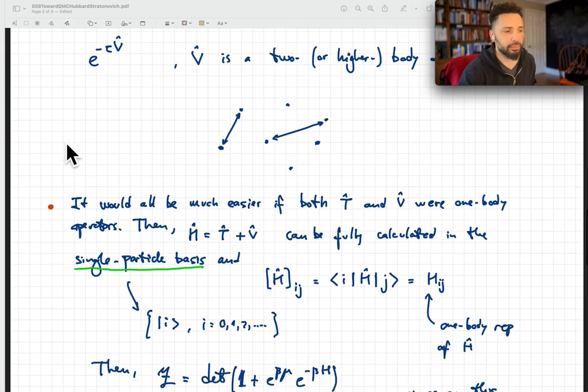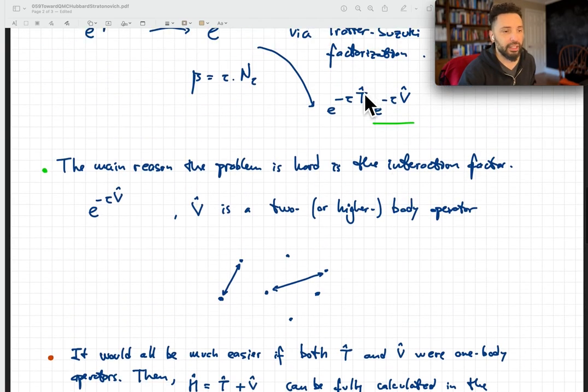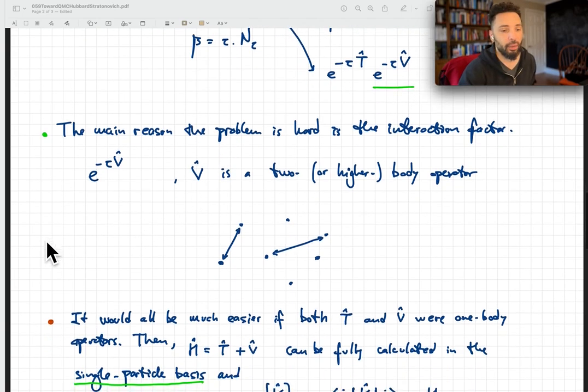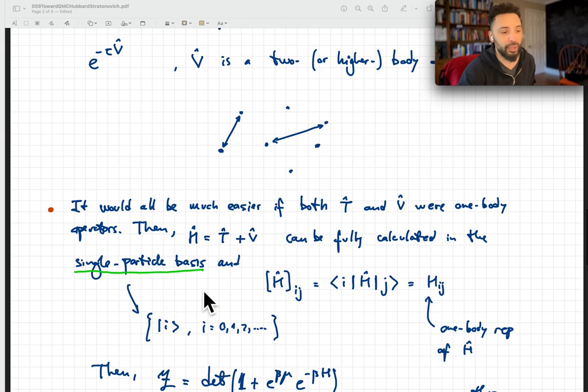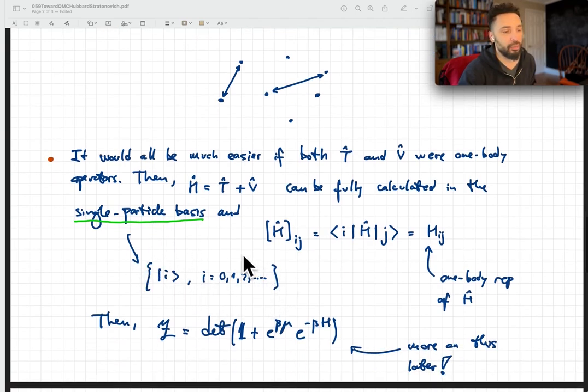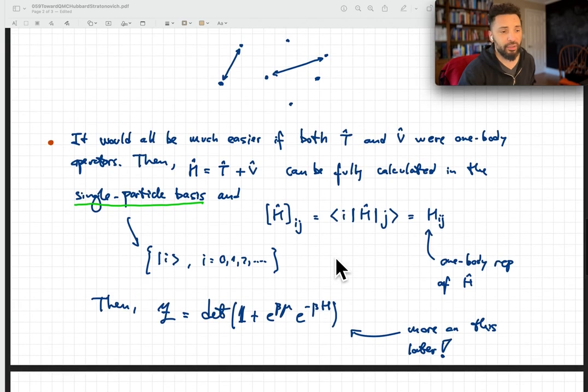It would all be much easier if both T and V were one-body operators. If all we had was just a kinetic energy and V were, for example, an external potential, which is usually a one-body operator, then the Hamiltonian would be just T plus V. If we could fully calculate it in the single particle basis, then you can calculate the matrix elements of the Hamiltonian. That would be the basis corresponding to one particle.